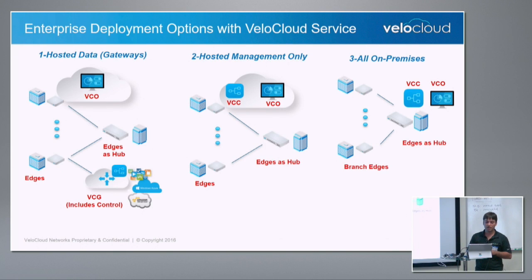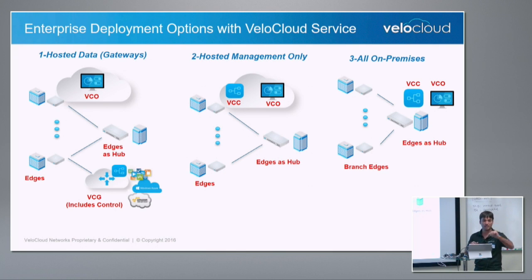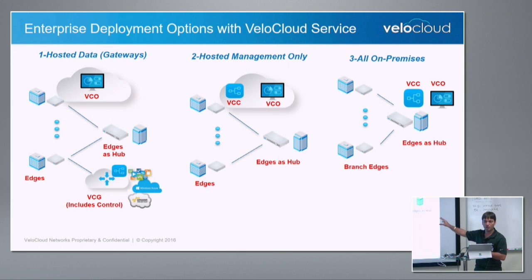Now, looking at different enterprise deployment options — there are several that VeloCloud supports. On the very right, you see a very traditional legacy deployment. You have a set of branch offices where every branch has one or two edge devices in HA or non-HA mode. All the site types I described are supported. You can have a controller on premise, with disaster recovery for controllers, and an orchestrator with disaster recovery with a single click. There is a hub deployed on premise, which is yet another edge, and all these appliances could be physical or virtual form factor.